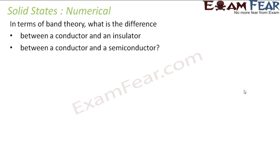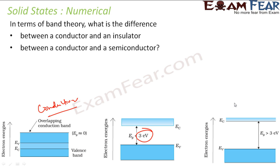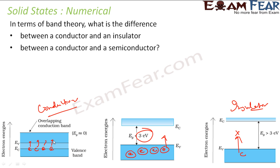In terms of band theory, what is the difference between a conductor, semiconductor, and insulator? For a conductor, the valence band and conduction band overlap. For a semiconductor, the gap between the valence band and conduction band is less than 3 eV. For an insulator, the band gap is very high, so electrons are not able to jump across. In a conductor, since bands overlap, all electrons can move freely.